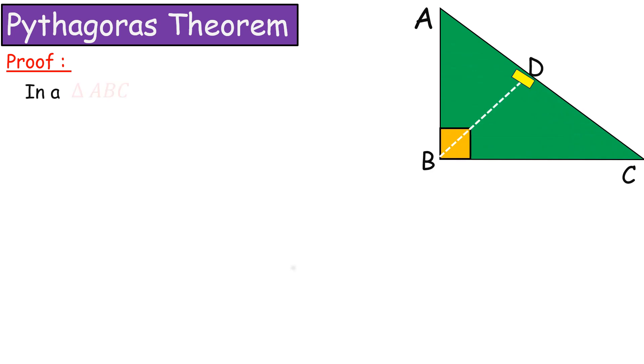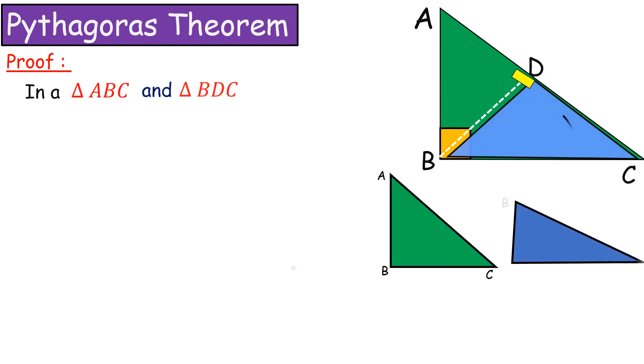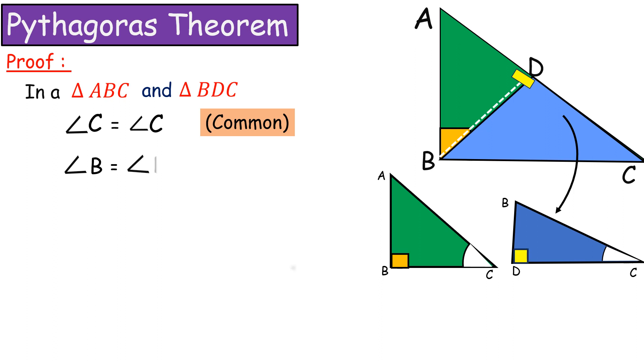Now, take triangle ABC and triangle BDC. Observe these triangles. Angle C is common. Here, angle B and angle D make 90 degrees. That is, angle ABC and angle BDC are equal to 90 degrees.